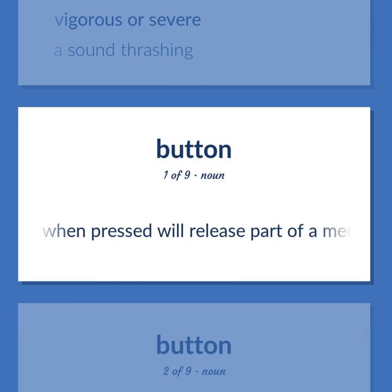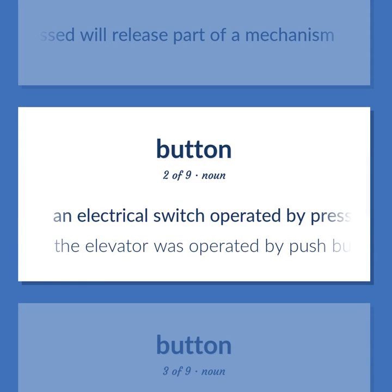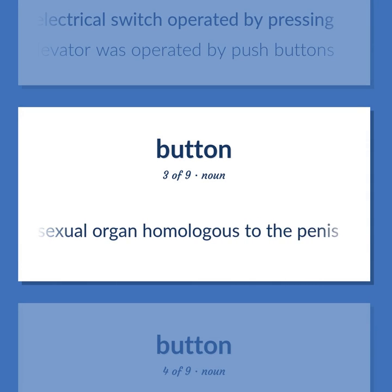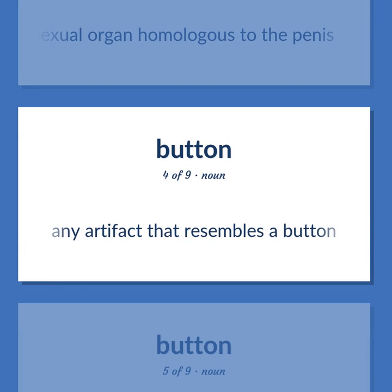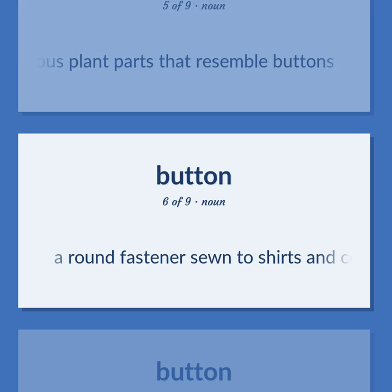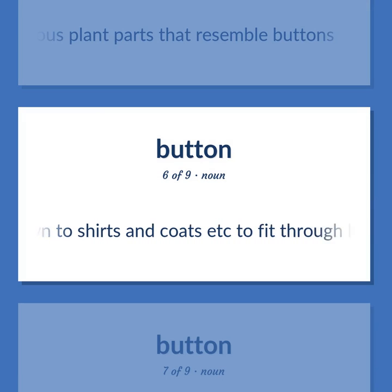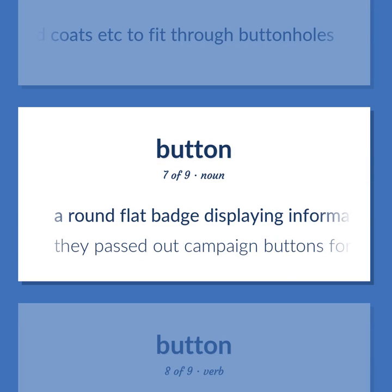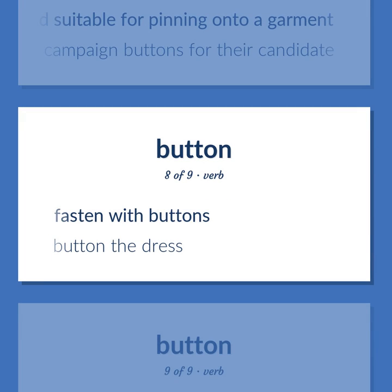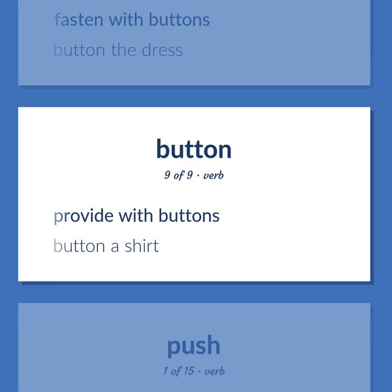A device that when pressed will release part of a mechanism. An electrical switch operated by pressing — the elevator was operated by push buttons. A female sexual organ, homologous to the penis. Any artifact that resembles a button. Any of various plant parts that resemble buttons. A round fastener sewn to shirts and coats etc. to fit through buttonholes. A round flat badge displaying information and suitable for pinning onto a garment — they passed out campaign buttons for their candidate. Fasten with buttons — button the dress. Provide with buttons — button a shirt.